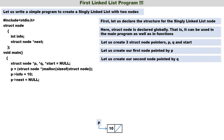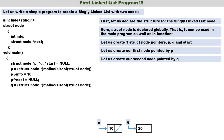Now let us create the second node pointed by q: q = (struct node*) malloc(sizeof(struct node)). We have a new node pointed by q. We store a value: q->info = 20. Then q->next = NULL. We have now created two nodes — one pointed by p and the other pointed by q.